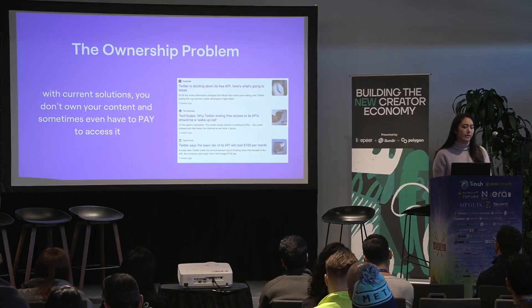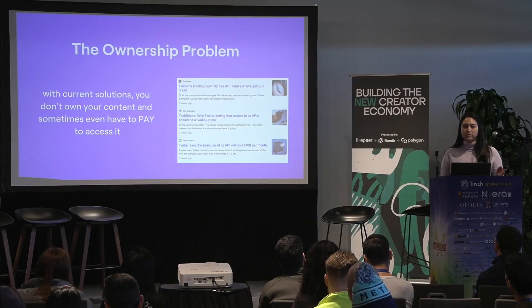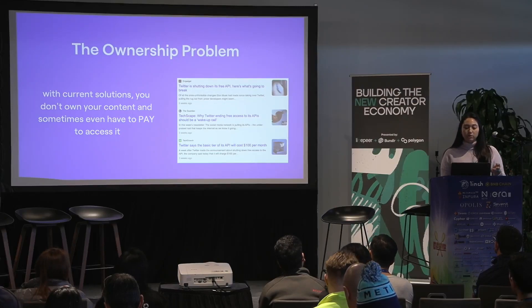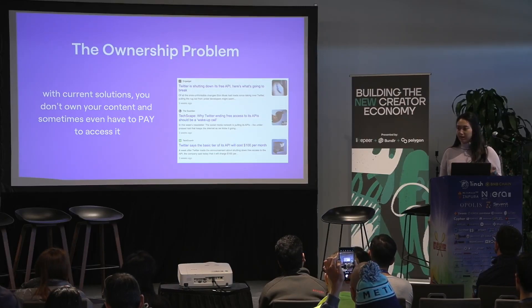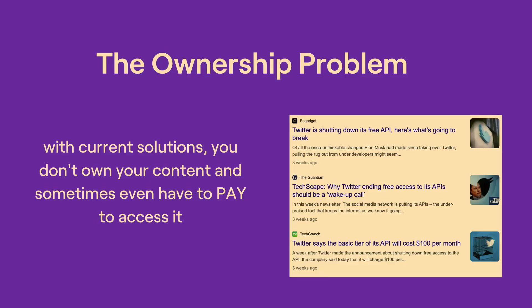There's also a big ownership problem. With the current solutions we have right now, you don't own your content. I don't know if anybody saw the Twitter API news over the past few weeks — they're shutting down their free API and now you have to pay to pull your own data. This shows that you really don't own your content if you have to pay to pull it down and access it, which is a huge problem.